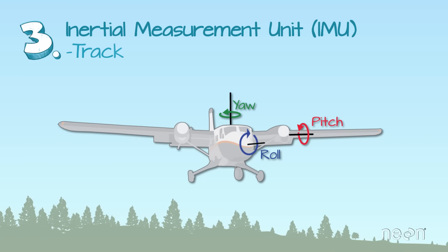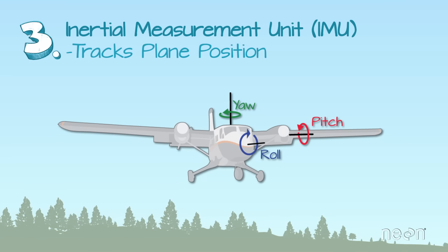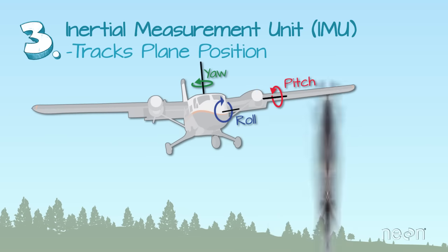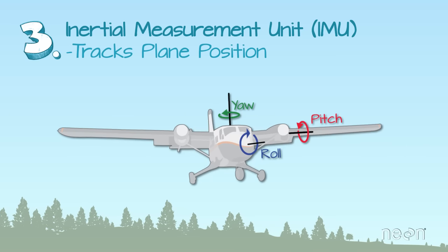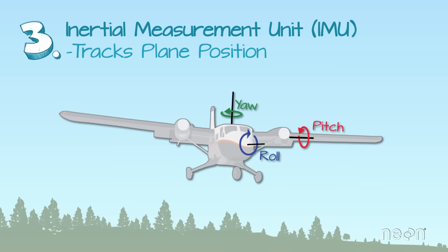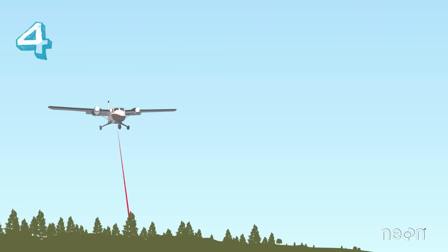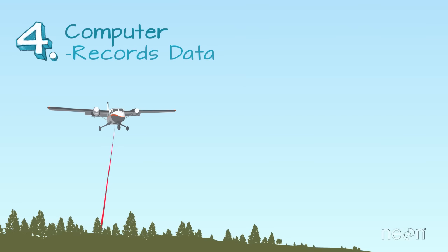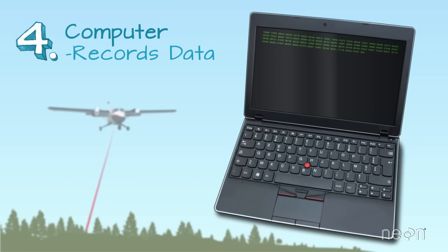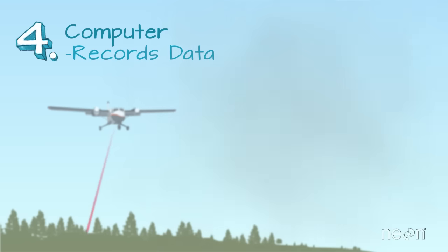The third component is what's called an Inertial Measurement Unit, or IMU. The IMU tracks the tilt of the plane in the sky as it flies, which is important for accurate elevation calculations. Finally, the LIDAR system includes a computer, which records all of the important height information that the LIDAR collects as it scans the Earth's surface. No computer, no data — it's as simple as that.